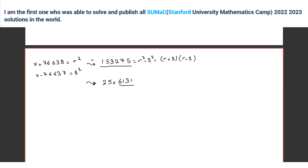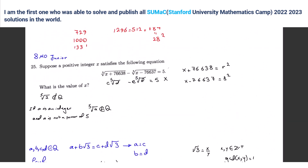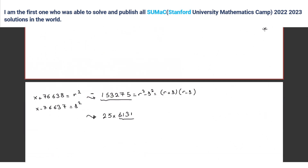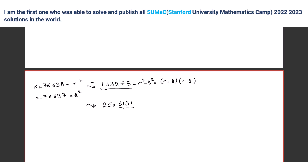Wait — it's r to the fifth and s to the fifth, sorry, because it's fifth powers. So r to the fifth minus s to the fifth — subtracting r to the fifth and s to the fifth.